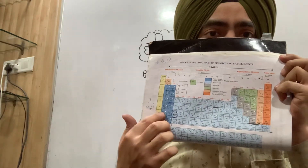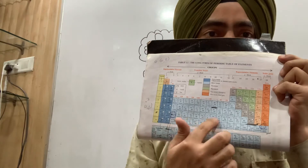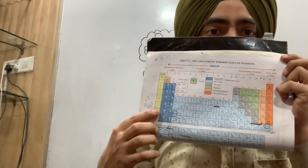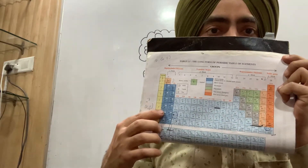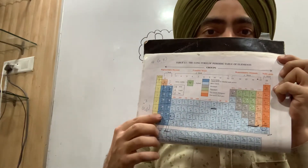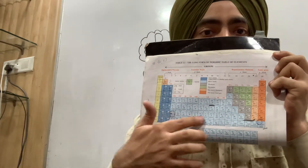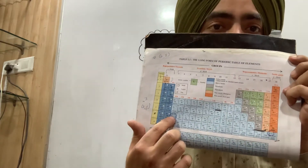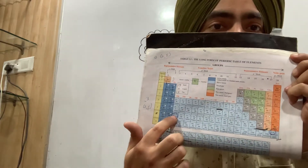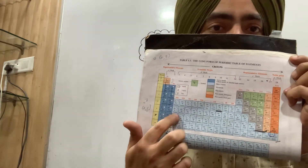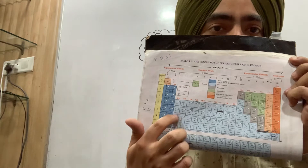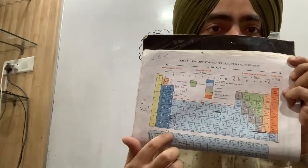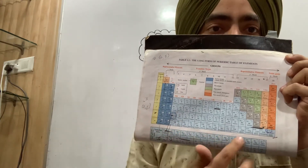The 6th period has 18 elements in the main table. The total elements in the 6th period are 32. This is the biggest period because it has the most elements. The 3rd period box shown here is smaller by comparison.